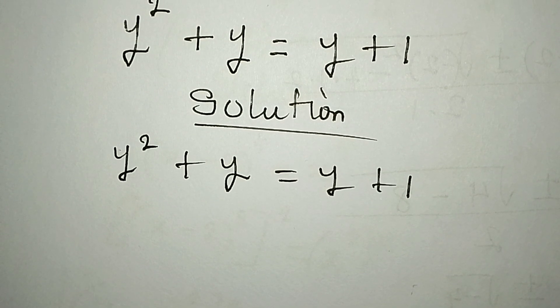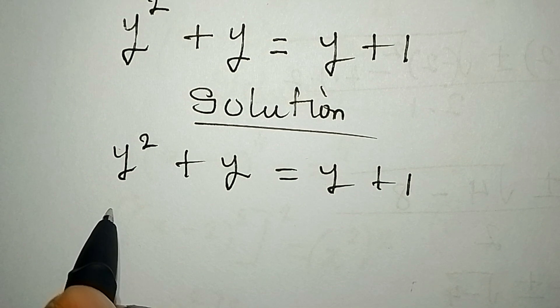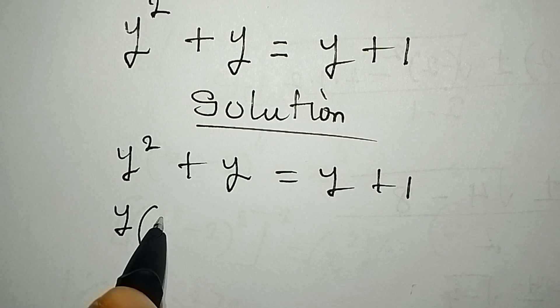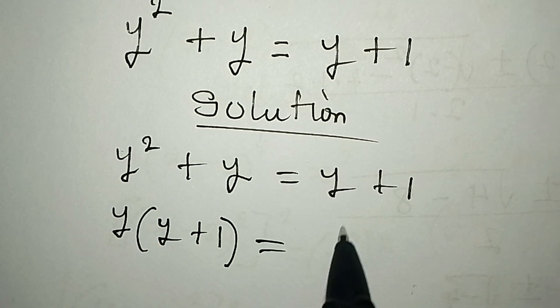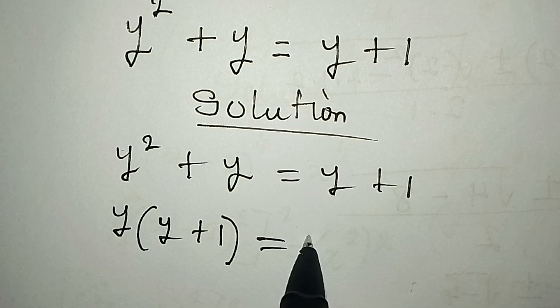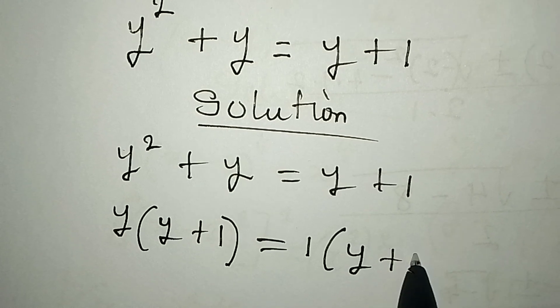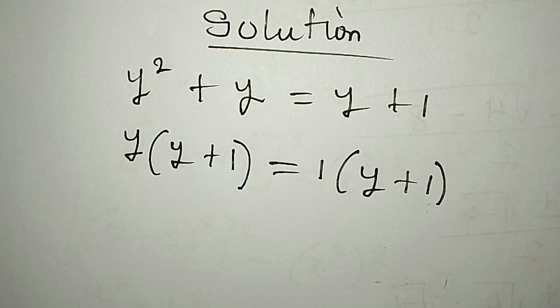I want to factorize both sides. Here, y is common, so I'm going to have y times y plus one. Then I'll go to the other side and factorize. Nothing is common, so I can have this as one times y plus one. Now, what can I do from here?